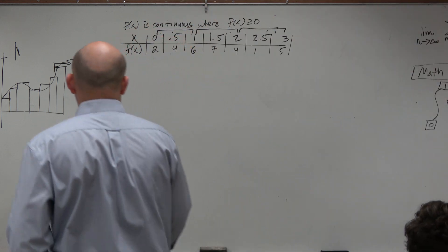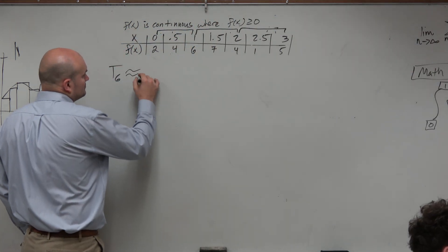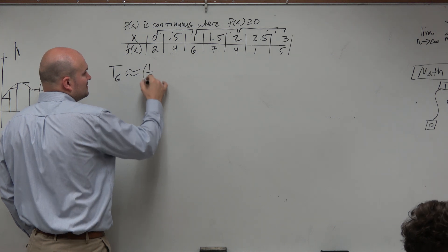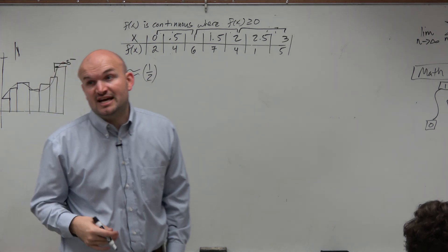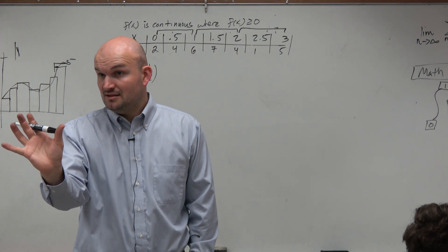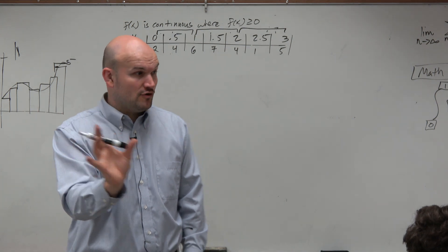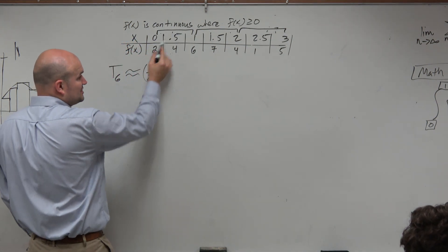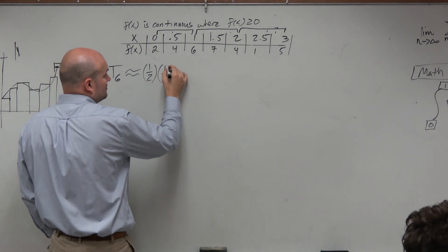We know that on trapezoidal approximations, we can factor out the 1 half. And we can also factor out the delta x, as long as the delta x is consistent, is uniform. And we said that we have that, which is consistent. So that's going to be 1 half.